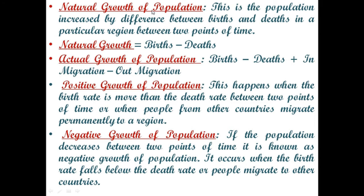Natural growth of population is the population increased by the difference between births and deaths in a particular region between two points of time. Natural growth equals number of births minus number of deaths.